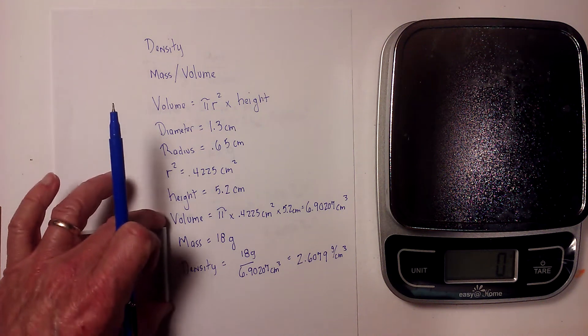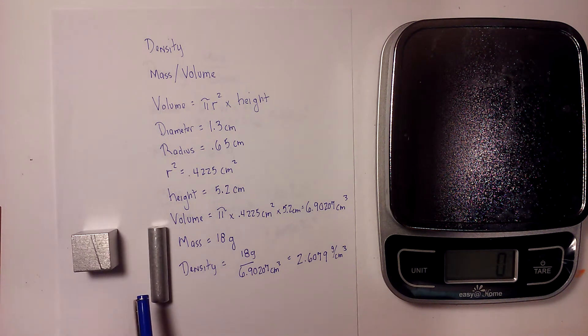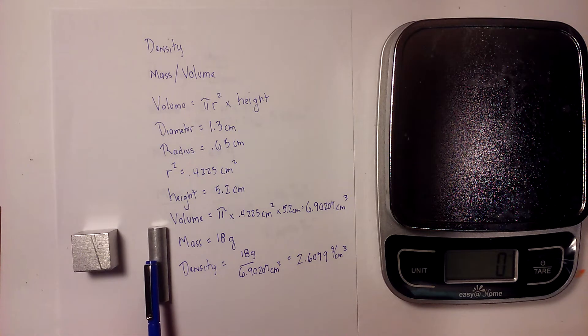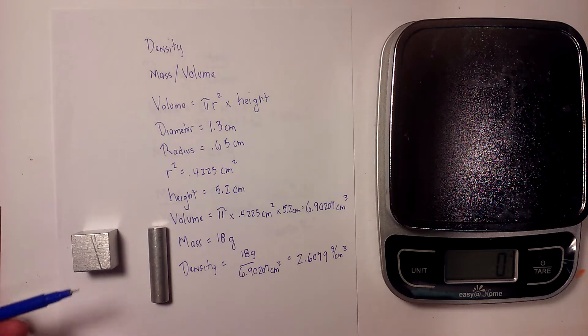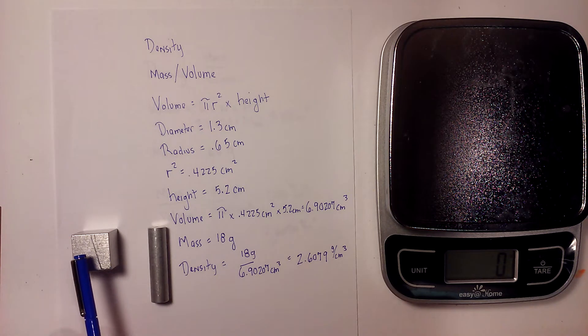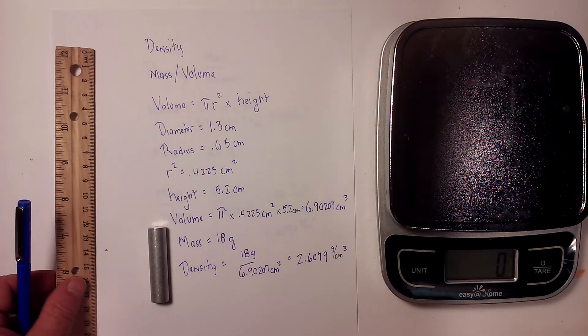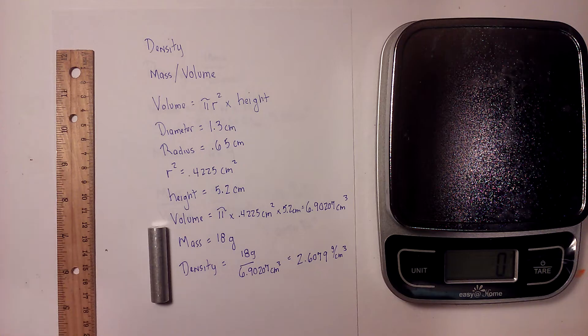In this video I'm going to show how to calculate the density of both a cylinder and this cube. I chose aluminum for both because I should be able to get the same density for the aluminum cube and the cylinder. So let's get started with the cylinder first, and also I'm using a ruler not a graduated cylinder.